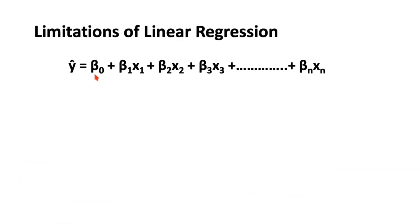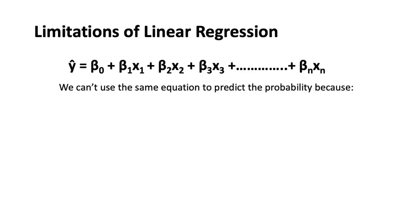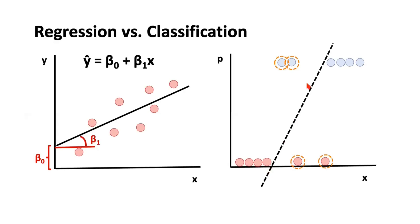We've seen the equation of simple linear regression and multiple linear regression. There are two main issues if we use a line to predict probability. Number one: probability always lies between zero and one, but a line can extend from negative infinity to positive infinity in terms of y-value. You might say we could cap it at zero and one — if it's below zero, bring it to zero; if it's above one, bring it to one. That can be done, but then comes the second problem, which is bigger.